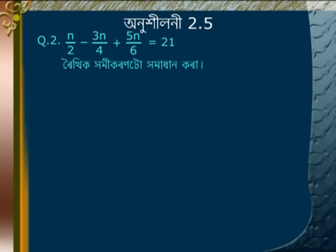Problem 2: Solve N/2 minus 3N/4 plus 5N/6 is equal to 21.